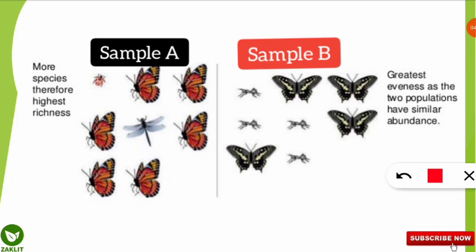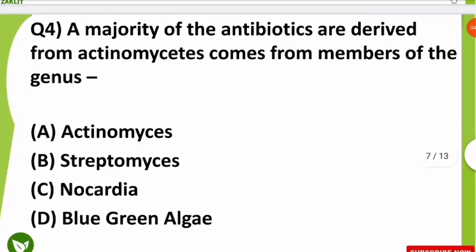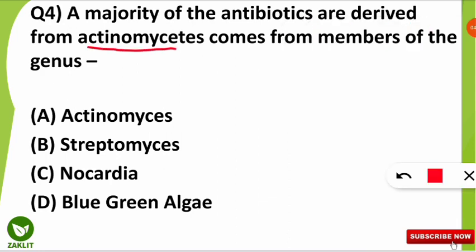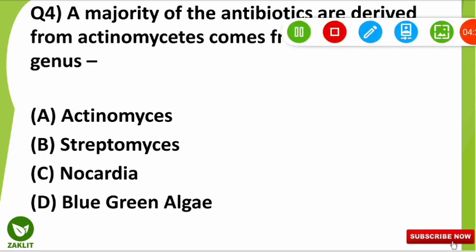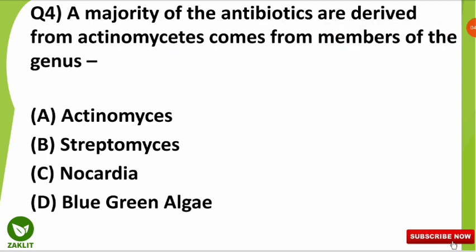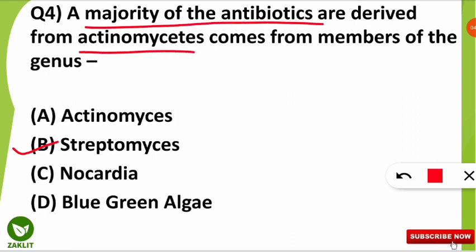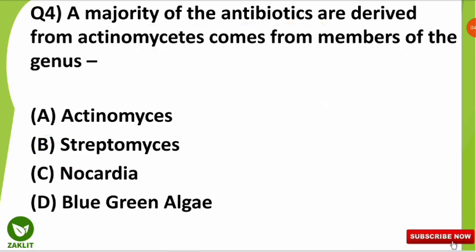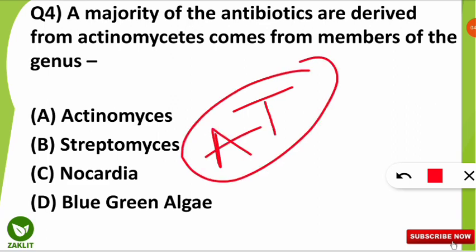The next question was: the majority of antibiotics are derived from actinomycetes, which come from members of which of the following genera? Most students selected Actinomyces, but the correct option is Streptomyces — the genus from which the majority of antibiotics derived from actinomycetes come. Streptomyces also produces other bioactive secondary metabolites including antifungal, antiviral, antitumoral agents, and immunosuppressants, making them very important in medicine.